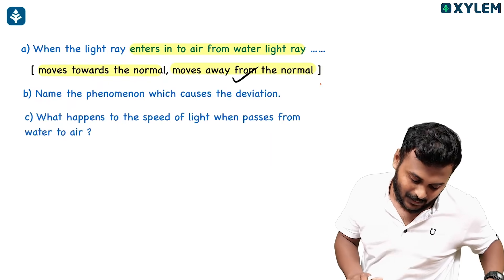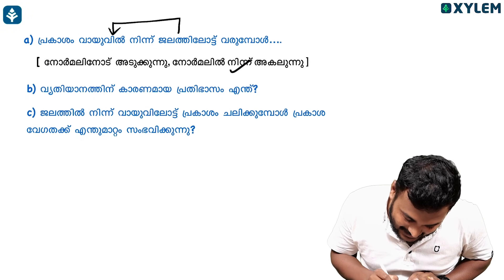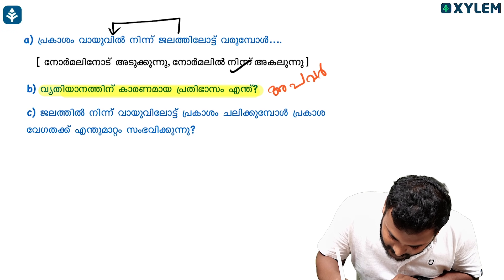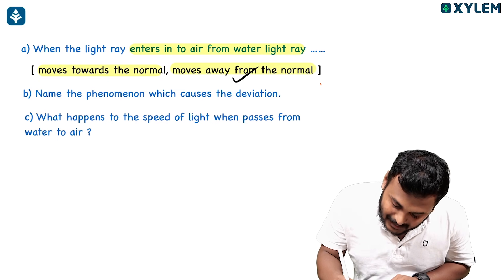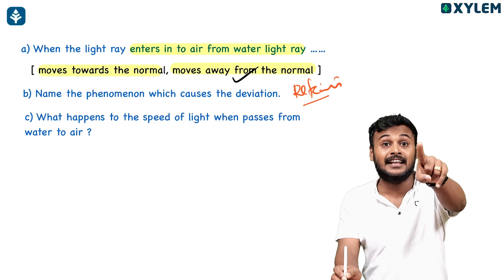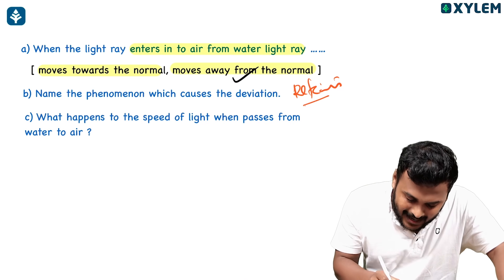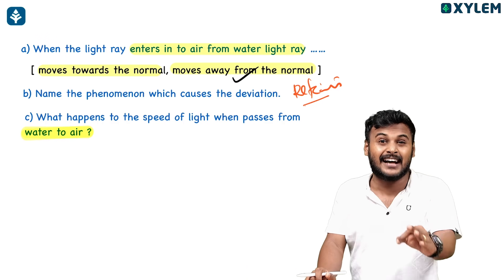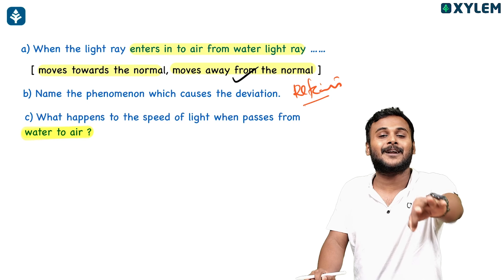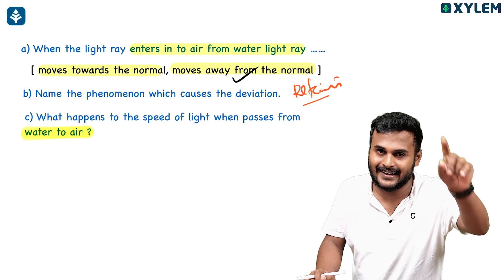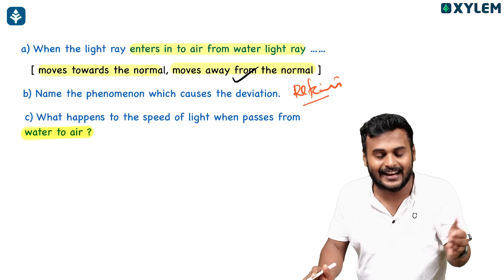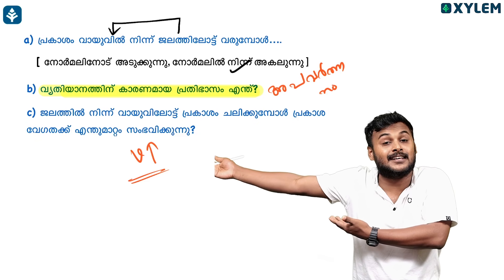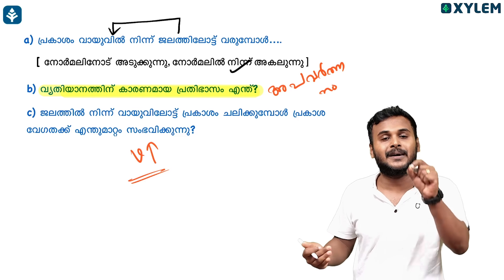Next question: name the phenomena that causes the deviation. The answer is refraction. That's important. What happens to the speed of light when it passes from water to air? The density decreases, so the speed will increase. The optical density is lower in air, so the speed of light goes up. Clear?